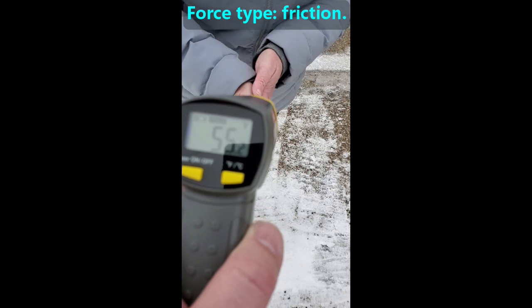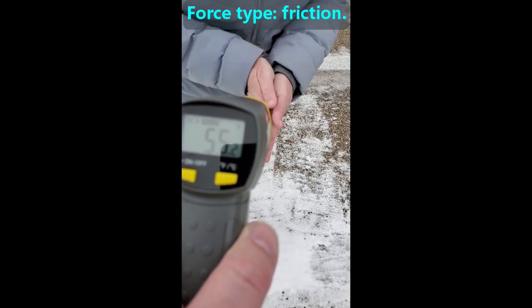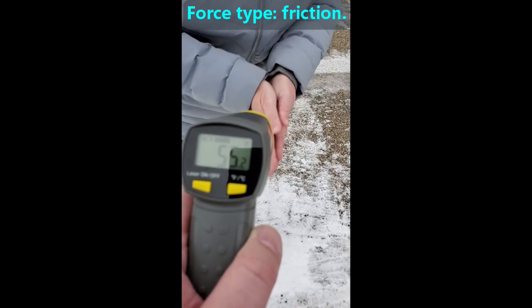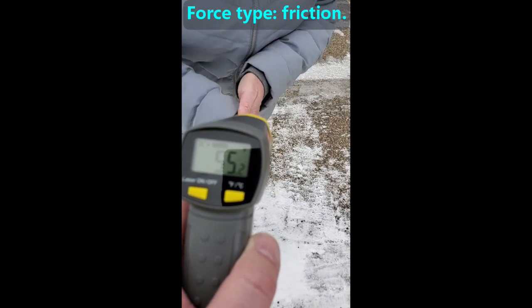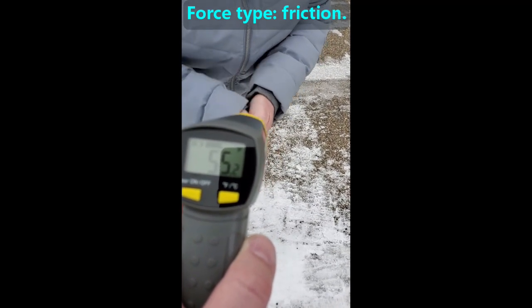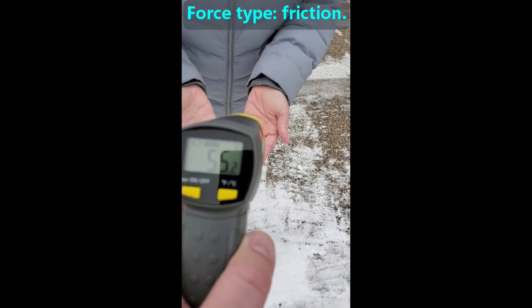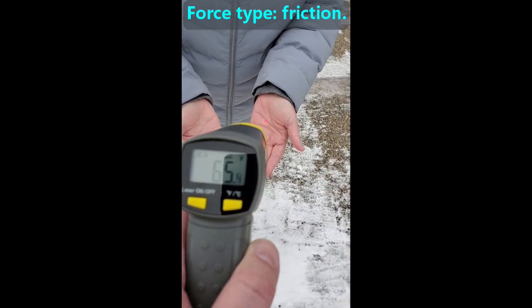When two objects rub against each other, there is friction between them, and friction makes heat. This lady is rubbing her hands together to warm them up. As you can see, she does raise the temperature of her hands by 10 degrees in just a few seconds.